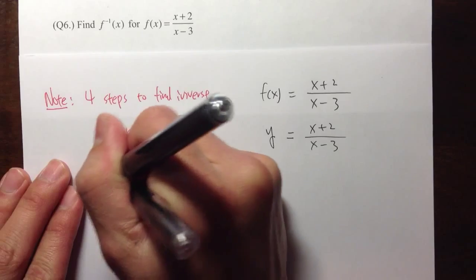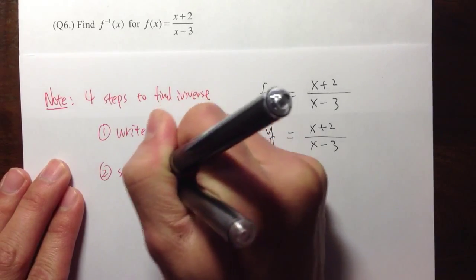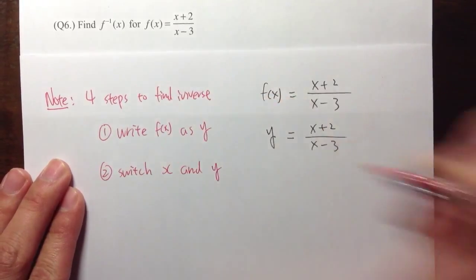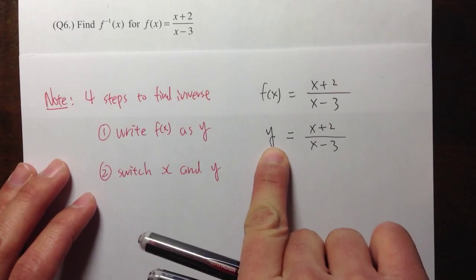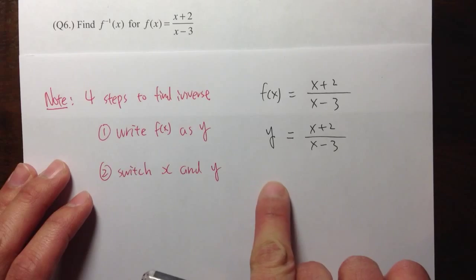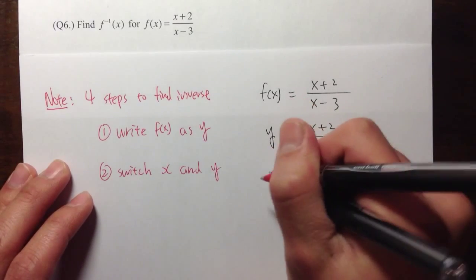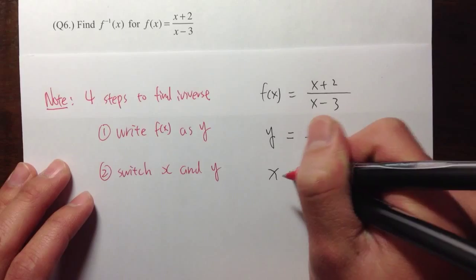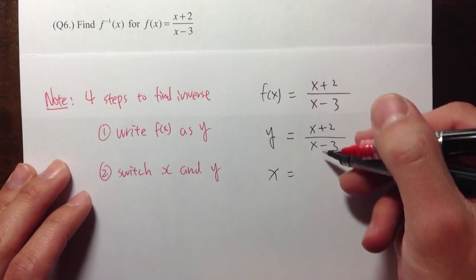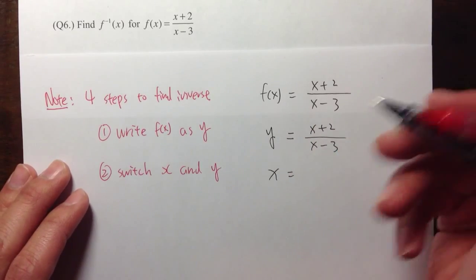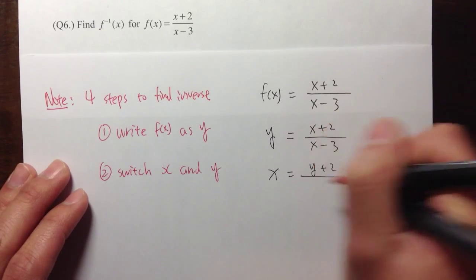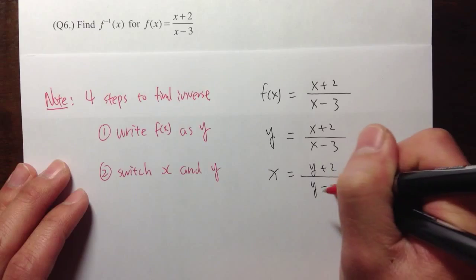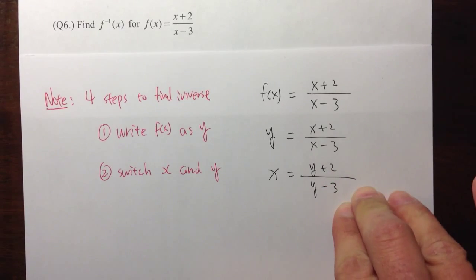Second, we are going to switch x and y. So what do I mean by this? Originally, we see right here we have a y. Now we are going to change this to an x. So we are going to change the y to an x. And then, we see an x right here originally. We are going to change them to y's. That's all. So y plus 2 over y minus 3. That's the second step.